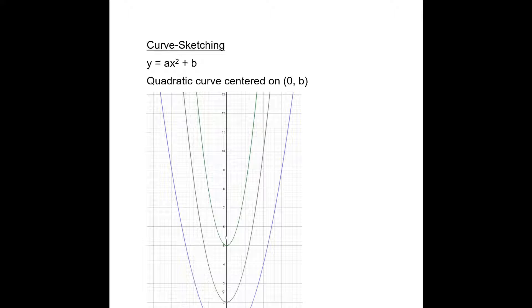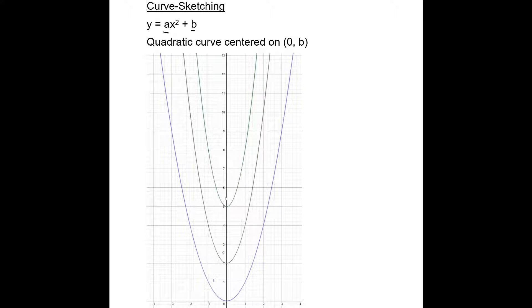For example, if we have a curve of the form y equals ax squared plus b, where a and b are constants, this is a quadratic curve centered on (0, b).